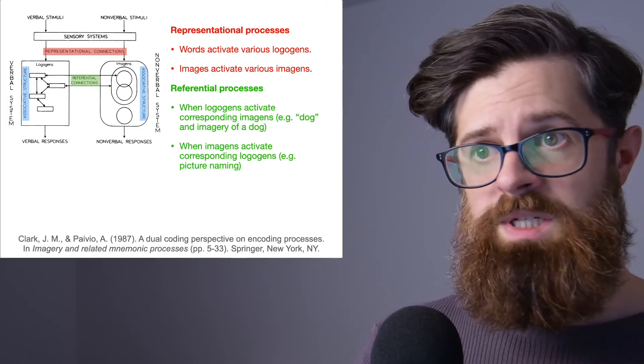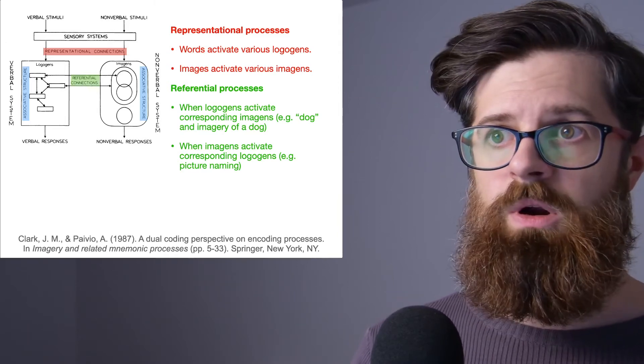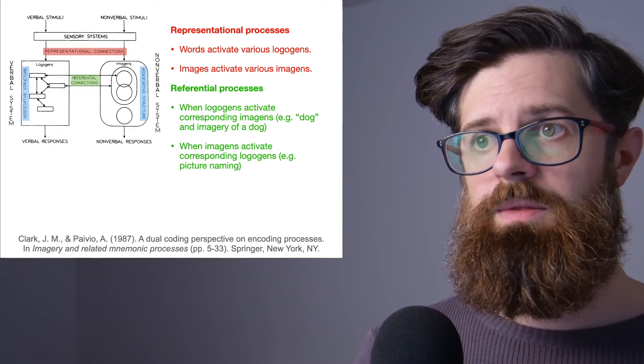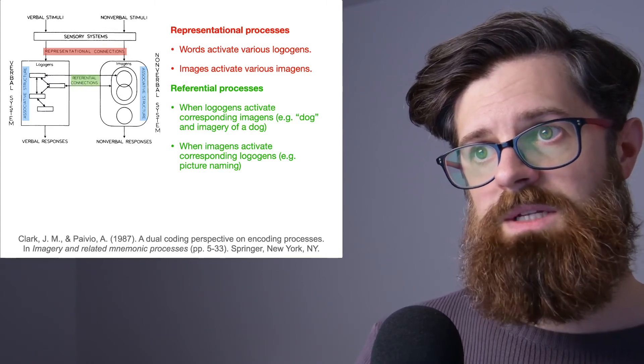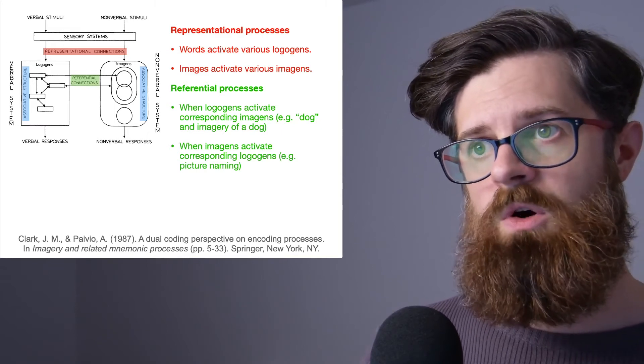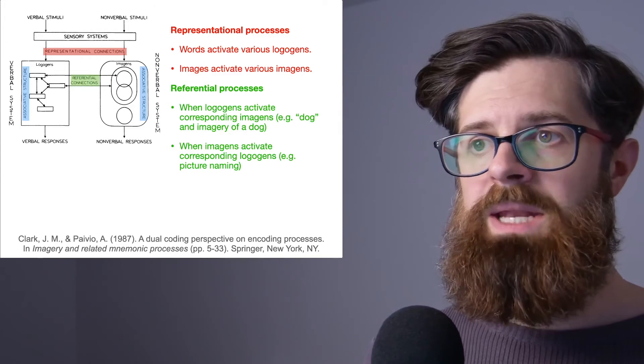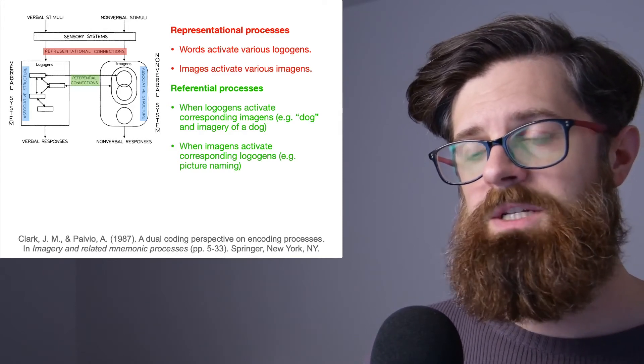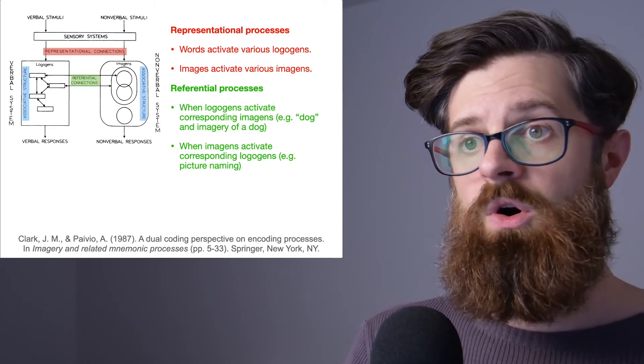The opposite thing might happen. So I might be shown a picture of a dog, and so the representational connections might activate some imagens representing pictures of dogs. But equally, that then might activate the logogen which represents the word or the verbal concept of a dog.